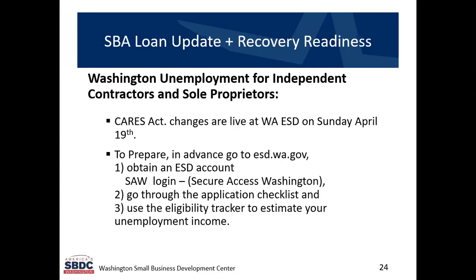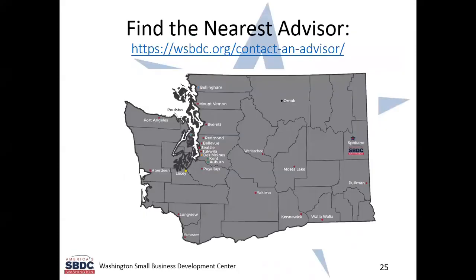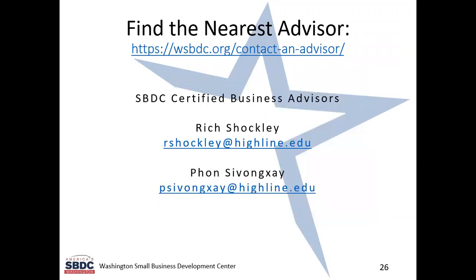This is a map of our state showing the different offices. Our website is wsbdc.org, and you can contact an advisor in your area and reach out for assistance. They'll have a phone number and an email. My contact information and Fawn's contact information are listed here — you are welcome to reach out to us, ask us any questions, and let us know how we can help.